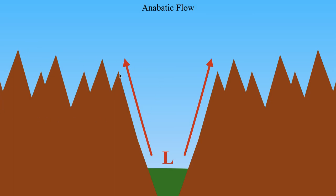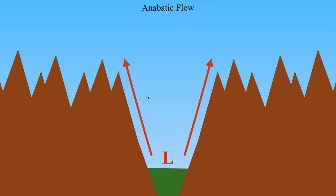Imagine we have a mountainous region — it doesn't have to be mountains, it can also just be hills. The slope of these mountains is going to heat a lot faster than the air at ground level at the lower elevations. As a consequence, you get this region of relatively hot air which is going to want to rise — it's going to be positively buoyant. If you get a sufficiently strong rising motion, that can lead to a region of lower pressure forming in the base of the valley or at the lower elevations.